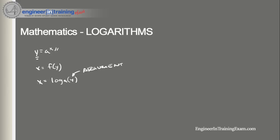When encountering logarithms, there are many rules that we can use to simplify the process of solving for the required information. When we see the argument of a logarithm as a product of two numbers, say log base a of y times z, it can be rewritten as the sum of the two logarithms: log base a of y times z is also equal to log base a of y plus log base a of z.